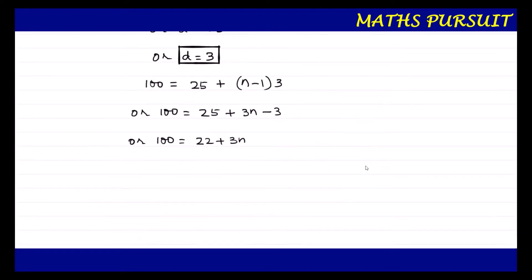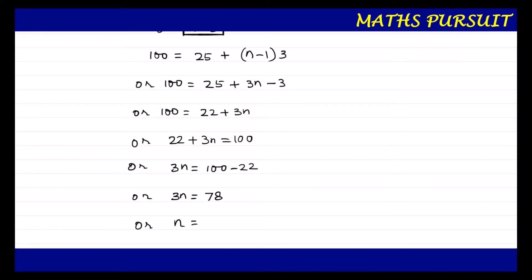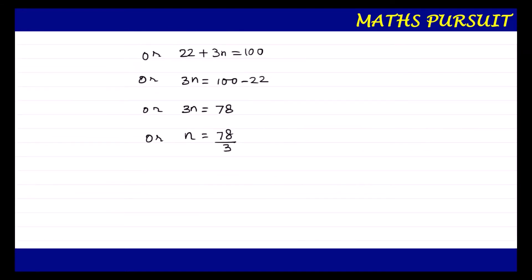Rearranging: 22 + 3n = 100, so 3n = 100 − 22 = 78, therefore n = 78 ÷ 3 = 26. We have found the value of n, which is 26.